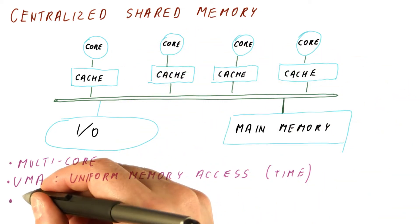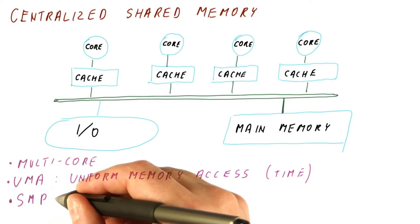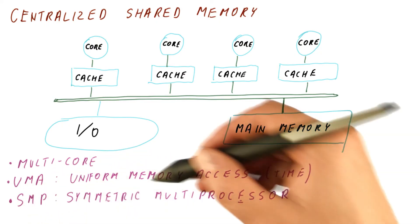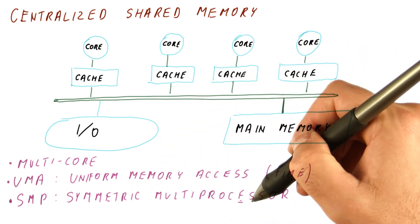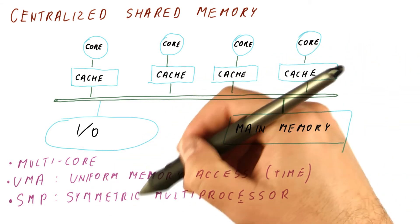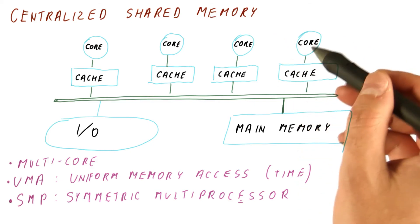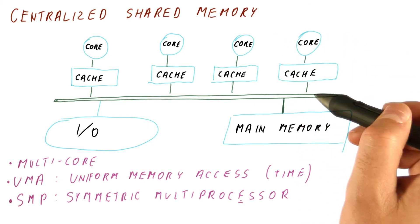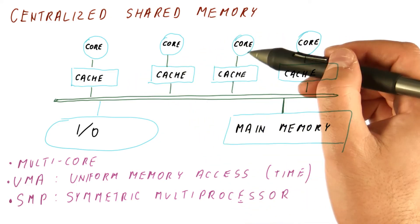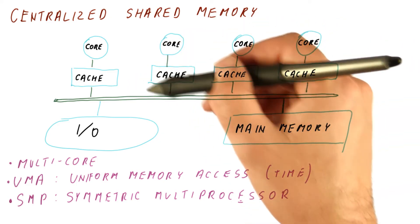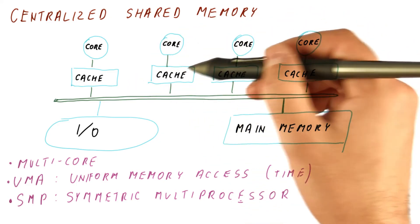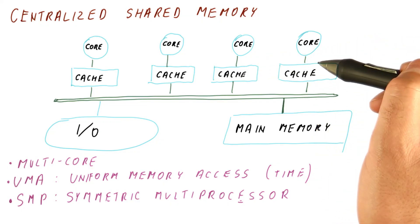This type of multiprocessing is also called SMP, which stands for symmetric multiprocessor. It's called symmetric because any core and its cache look just like any other core and its cache in the system. So if we had two cores, we can just take one of them with its caches and replicate to make a four core system.